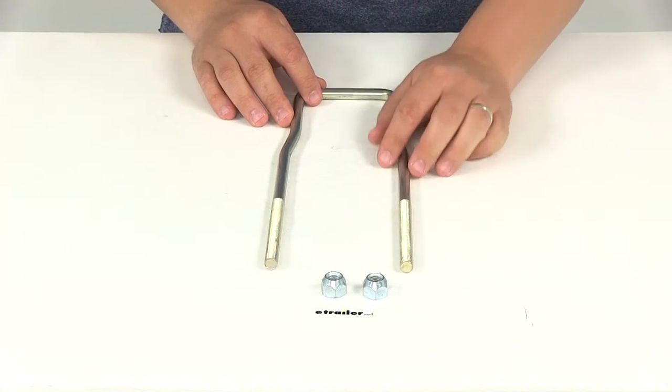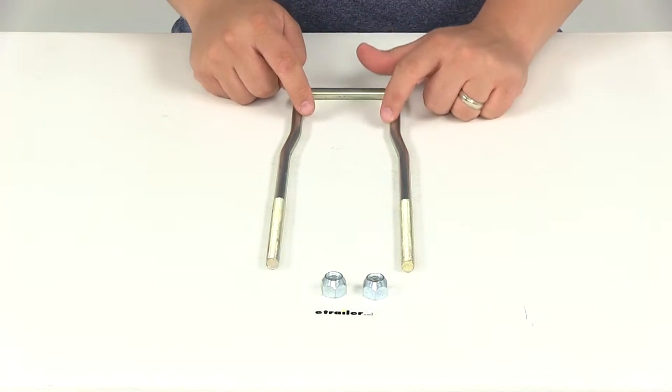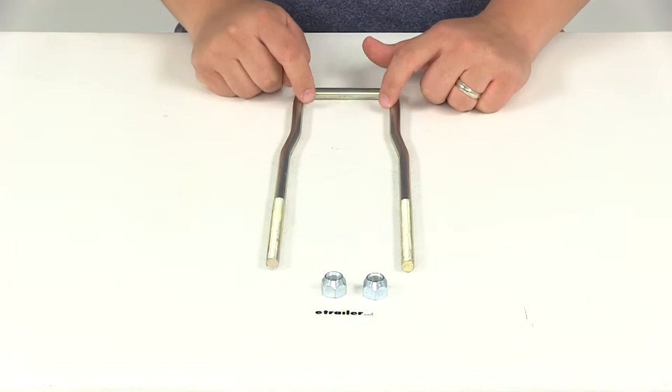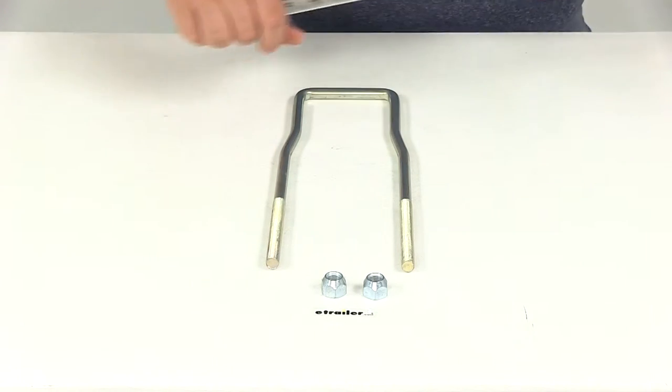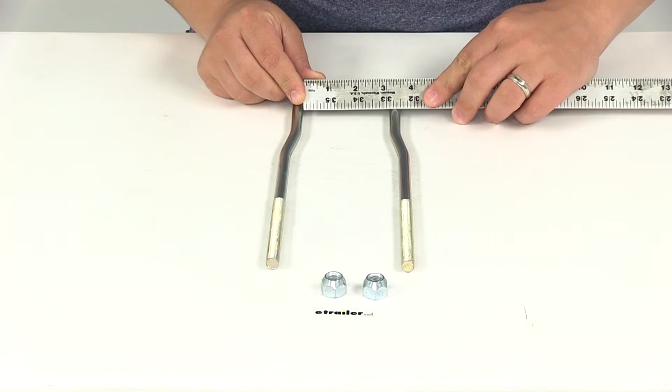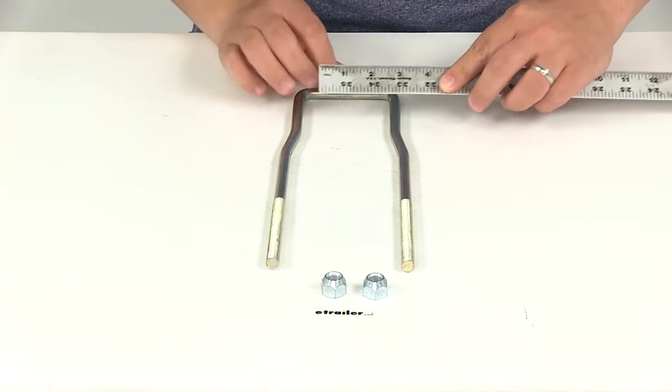We're going to go over some basic measurements. This is the portion that's going to go around your trailer frame, rail or tongue. Measuring inside edge to inside edge, that gives us a measurement of 3 1/16th of an inch.